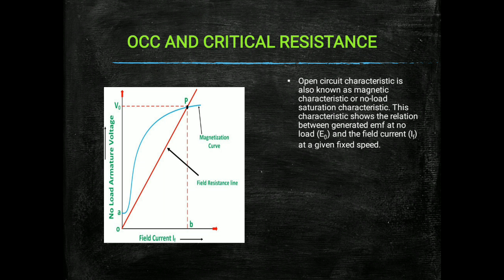From this graphical representation we can see that if the field current is increased then the no-load armature voltage or the generated EMF is also increased. But the magnetizing curve does not start from the origin O; it starts from point A due to residual magnetism. When the field current is zero, the value of induced voltage is not zero due to residual magnetism. For that reason the magnetizing characteristic does not start from the origin.